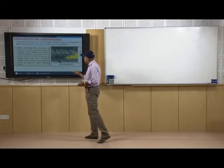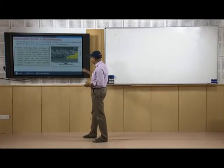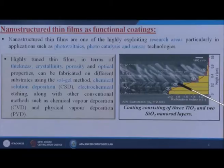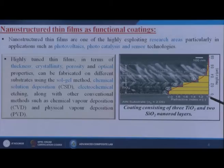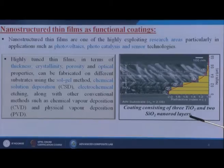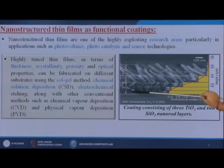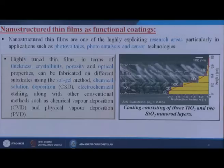Here is an example: we take a substrate of AlN on which we apply layer-by-layer coatings of different materials such as titanium dioxide and silicon dioxide. The coating consists of three different TiO2 nano rod layers and two SiO2 nano rod layers, and from the figure you can see the size of each layer in micrometers.